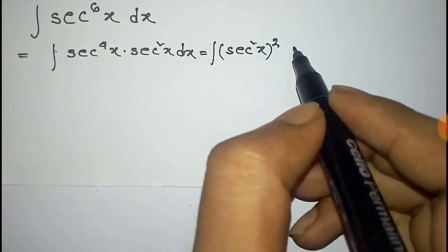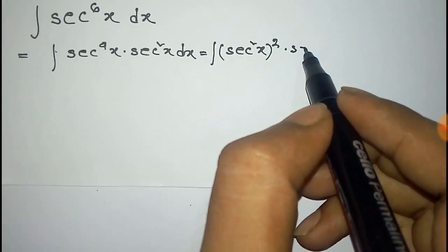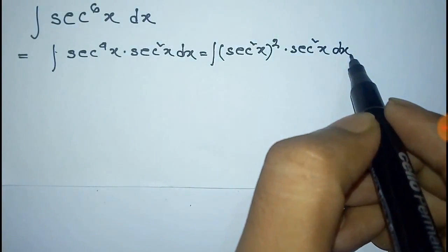Now this sec^4x can be written as sec^2x total whole square into the remaining sec^2x dx.